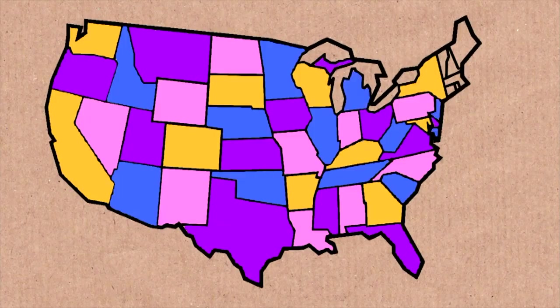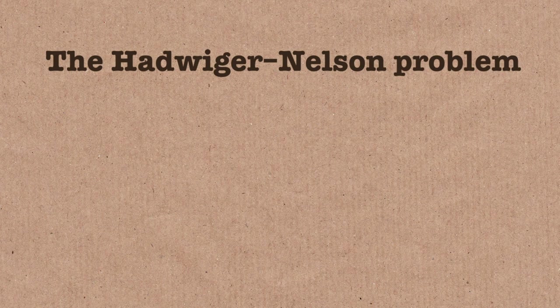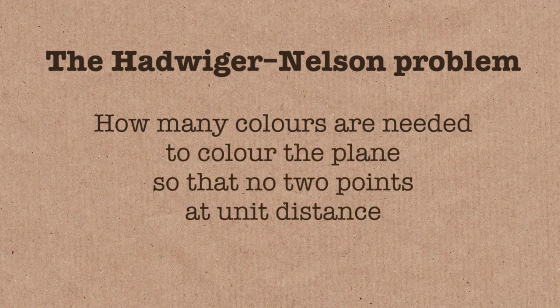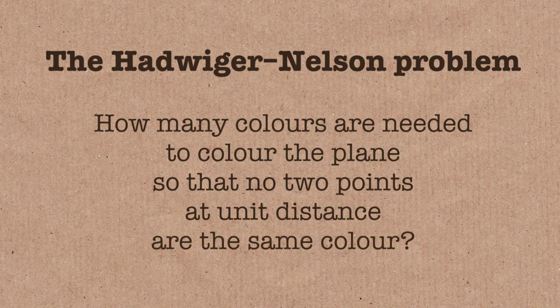But this problem that I'm going to talk about today comes from the 1950s, and it's not something that's been solved yet. It's called the Hadwiger-Nelson problem. Catchy name. And I'm going to try and quote you what the problem is. How many colours are needed to colour the plane so that no two points at unit distance are the same colour? That's very formal, so let me just break that down.